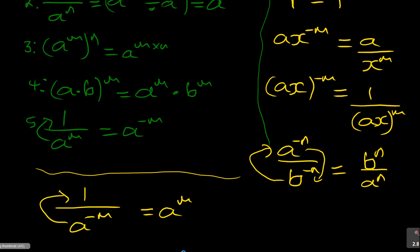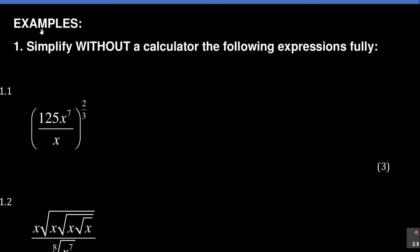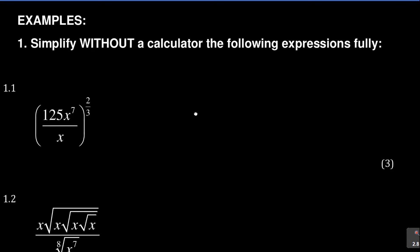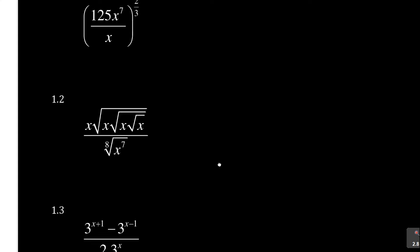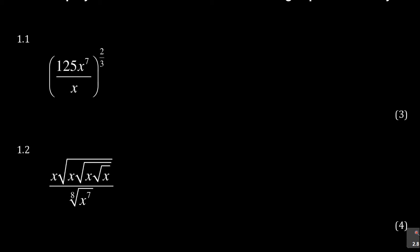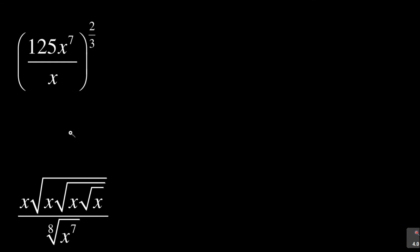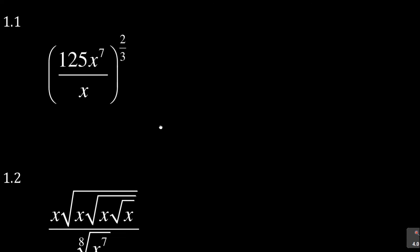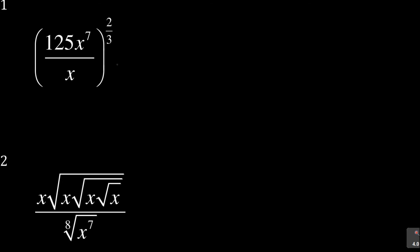Let's look at an activity: simplify the following expressions without a calculator. The questions are worth three marks, four marks, and three marks respectively. Take it easy, take it slow — no panic. You just need to see what they're trying to trick you on. First, look at 125 — you need to express it in terms of exponents. Also, the x here has no written power, but it has a default exponent of one.